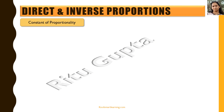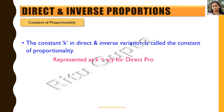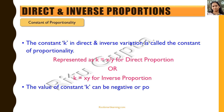Now let us see what the constant of proportionality is. The constant k in direct and inverse variation is called the constant of proportionality. We represent k as x by y for direct proportion, and k equals x into y for inverse proportion. The value of the constant k can be negative or positive; it can also be a fraction or decimal.